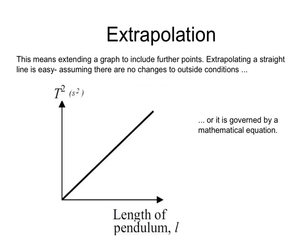In physics, sometimes we extrapolate a graph to include further points. And if there is a mathematical relationship between the two bits of data, then it's fairly easy to see that you can extrapolate the graph because all points would be valid, such as on this one, where as you increase the length of a pendulum, the time squared increases proportionally.